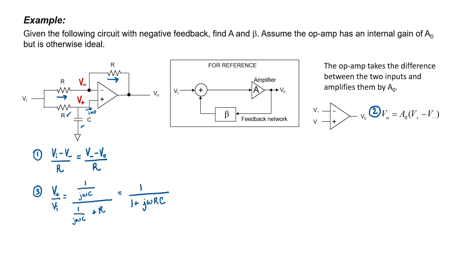I'm going to multiply every term times j omega C. I'm interested in determining the gain of this particular circuit, so I'm going to start with equation two and try to eliminate V plus and V minus. I can use equation three to rewrite V plus in terms of VI.